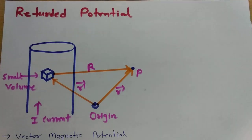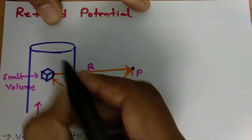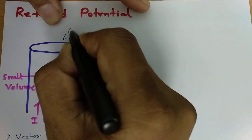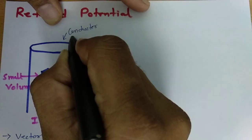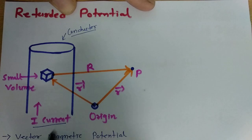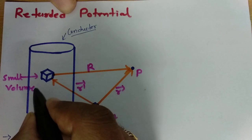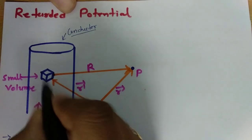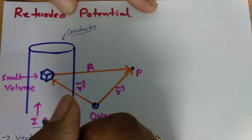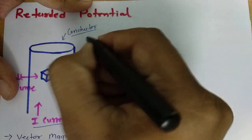Welcome to the antenna and wave propagation playlist. In this session I will explain retarded potential. To explain retarded potential I have considered one conductor. Through this conductor current i is passing, and for the observation point I have considered a very small differential volume. Because of current i passing through this conductor, there is current density j.